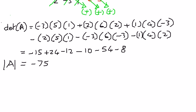We have solved this problem, and we solved a similar type of example in my previous video presentation using the expansion of cofactors, and the answer was exactly the same. In this example we used the diagonal product method to find the determinant. These are different ways of solving determinants. In my next presentation, we shall look at some more examples related to determinants.